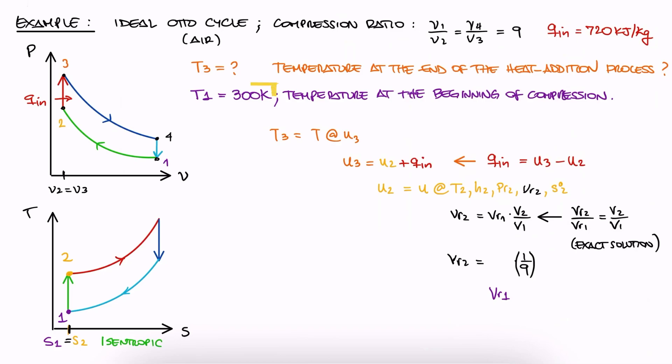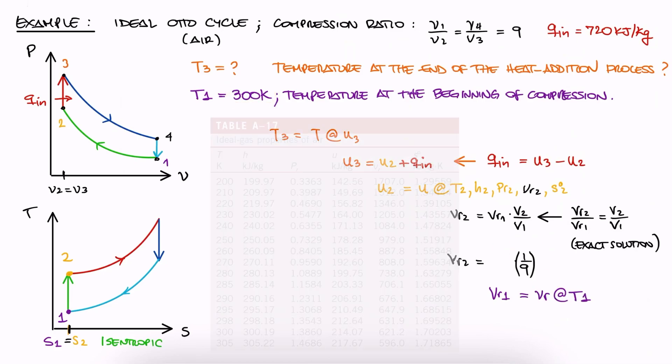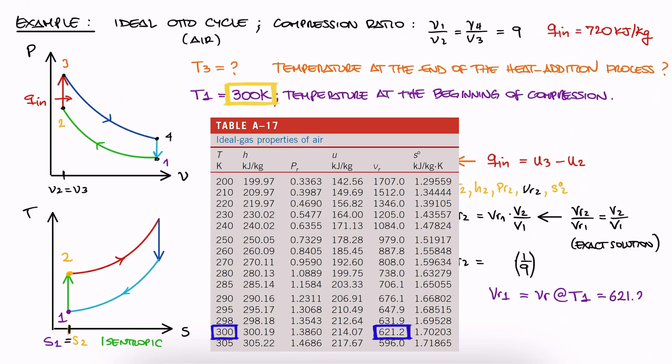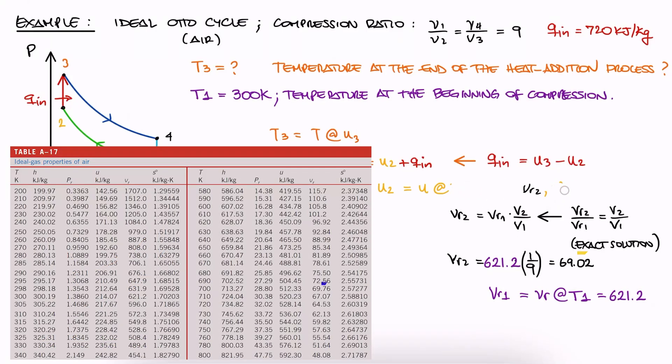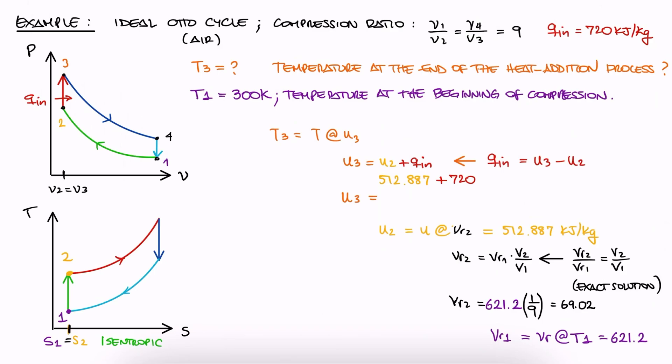But since we have the temperature at the beginning of the compression process, we have T1. We go to the table to find Vr1 for T1, and we use it with the compression ratio to calculate Vr2. We go to the table to find the closest two Vr values, and we interpolate to find U2.